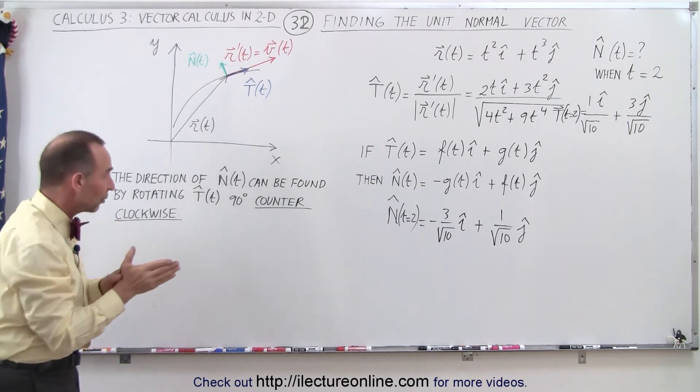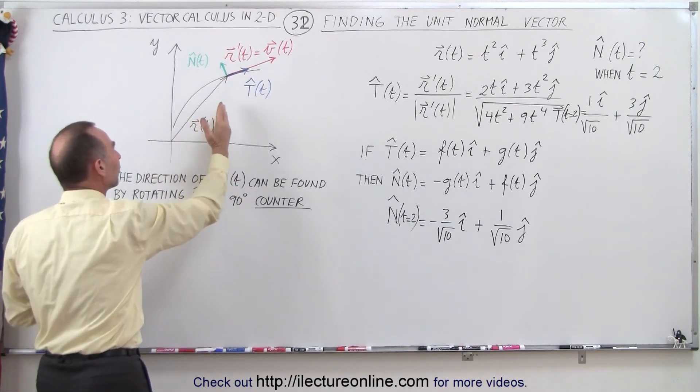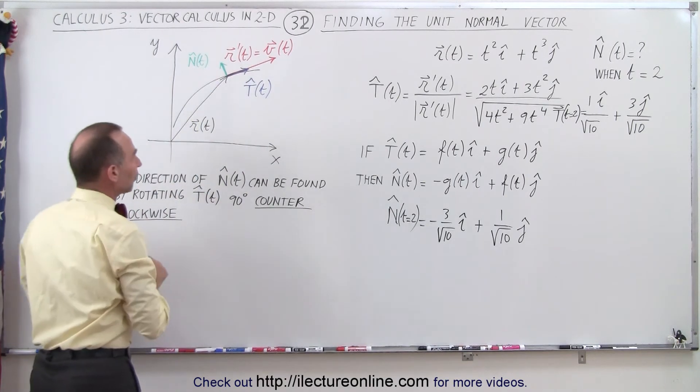To find the unit normal vector, we rotate counterclockwise 90 degrees from the unit tangent vector.